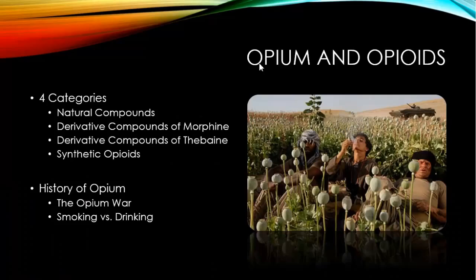The fourth category comprises drugs that are not chemically related to any of the natural extracts of opium but are instead synthesized entirely in the laboratory. As a result, they are often referred to as synthetic opioids. Examples include methadone, Demerol, Darvocet, LAAM, Tramadol, and Buprenorphine.